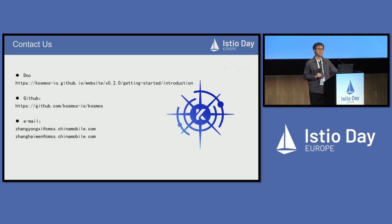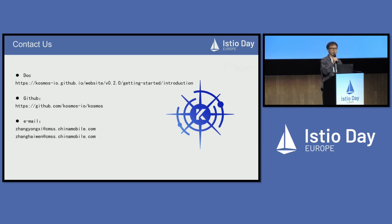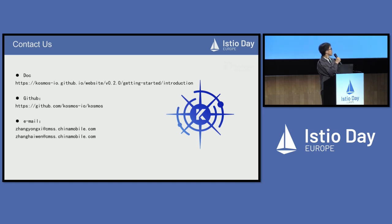Audience question: How do you ensure certificate rotation between your master cluster and sub-clusters, between the different Kubernetes clusters?